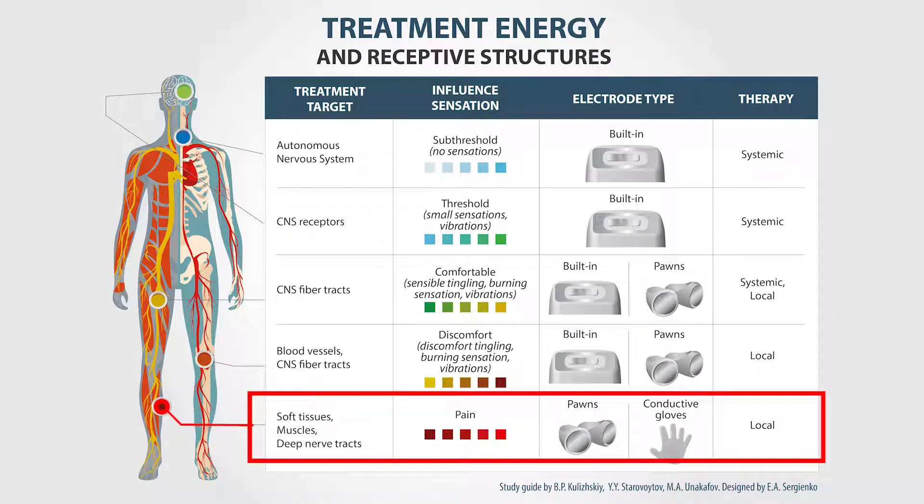The discomfort level of energy brings the nerves to a refractory state and treatment becomes local. The device now focuses on the soft tissues. This level is used for myostimulation and treatment of the locomotor system.